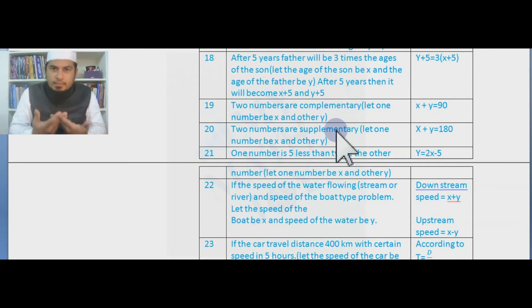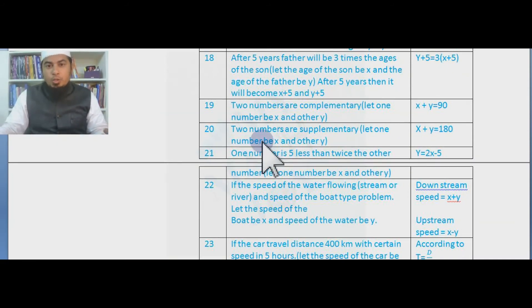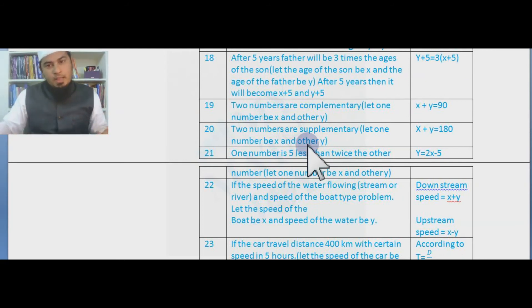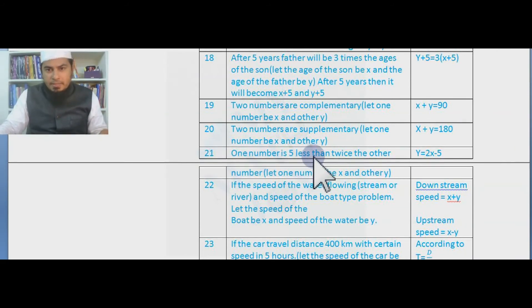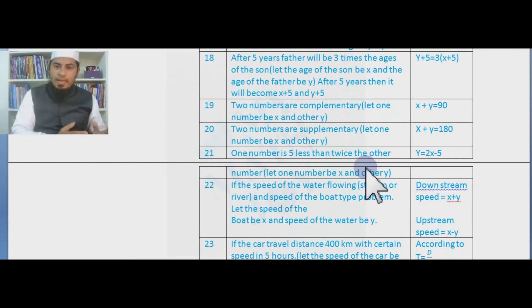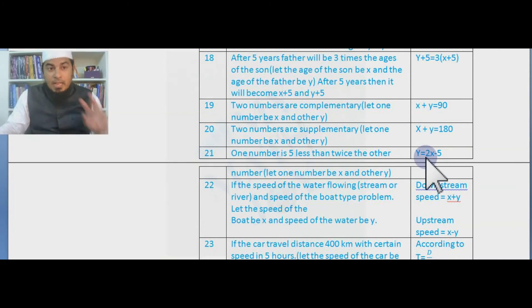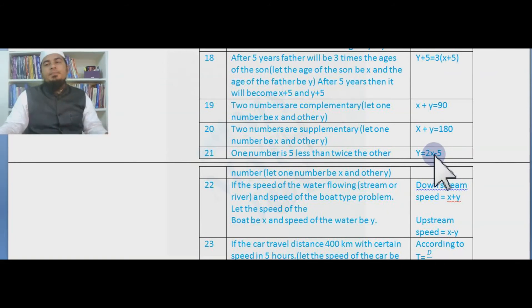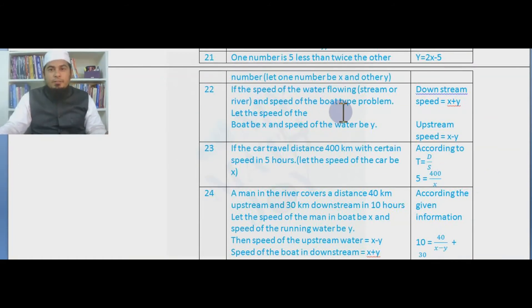Two numbers are supplementary — 'supplementary' means their sum equals 180, so x + y = 180. Let one number be x and the other be y. One number is five less than twice the other: x = 2y − 5. This is also very crucial — you need to understand such constructions carefully.